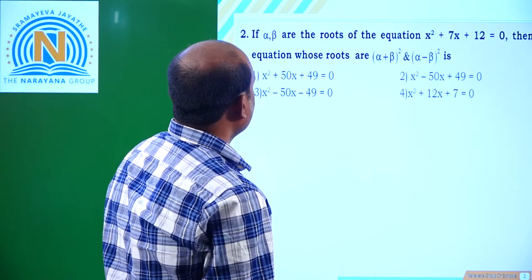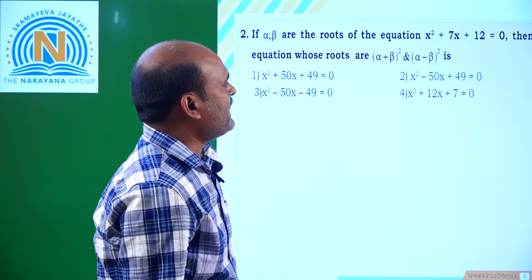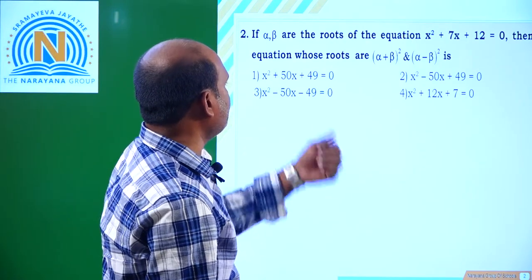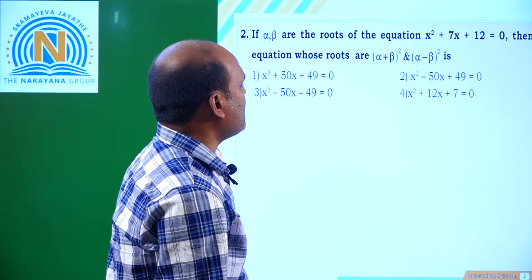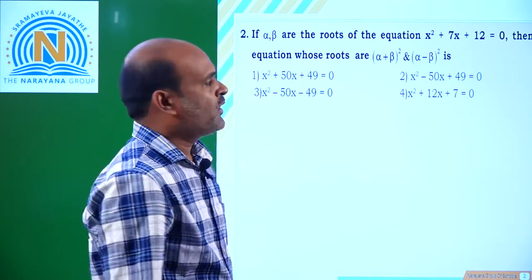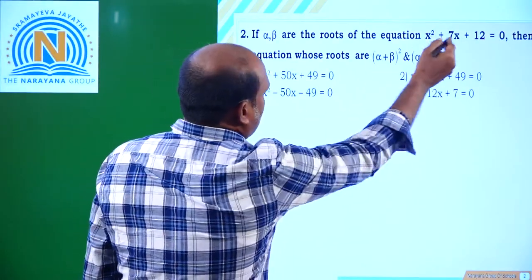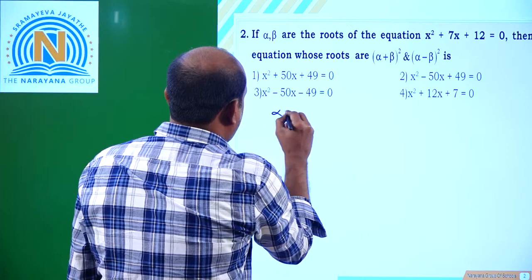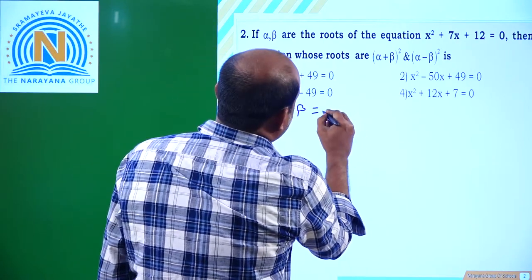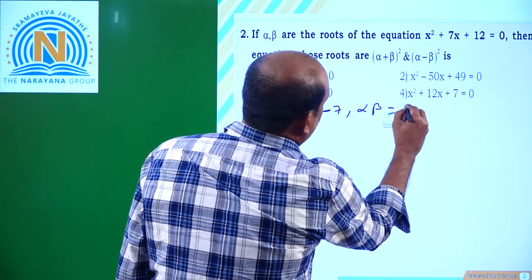Coming to the next question: if alpha and beta are the roots of x² + 7x + 12 = 0, then find the equation whose roots are (α + β)² and (α - β)². Alpha + beta = -b/a = -7, and alpha·beta = 12.